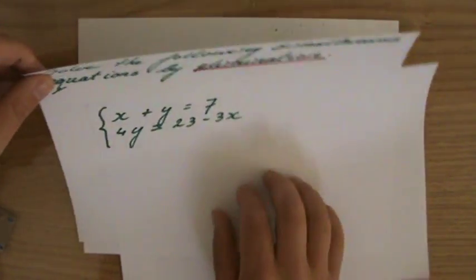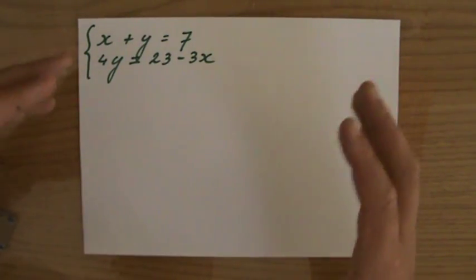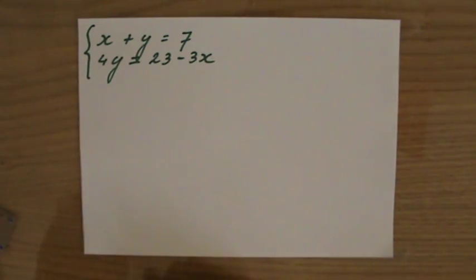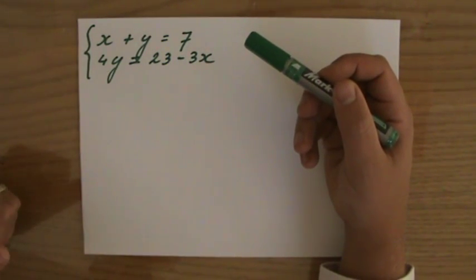An elimination method, we want to eliminate one of the variables by adding or subtracting the two equations. Now can I add, can I subtract, what do I have to do, or which variable do I want to get rid of?